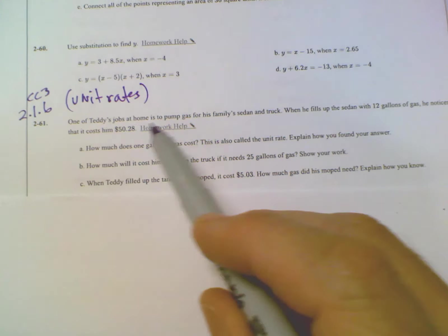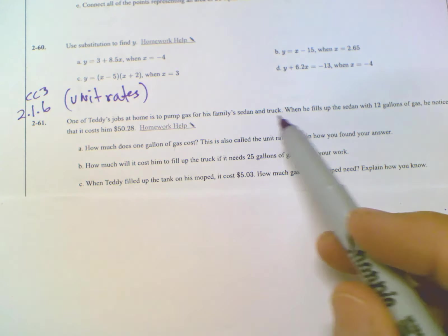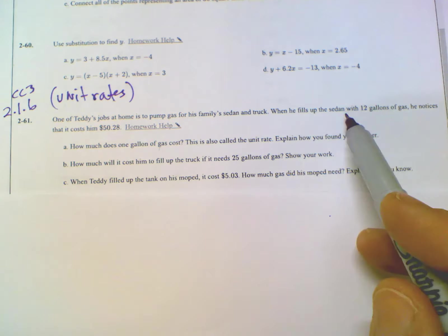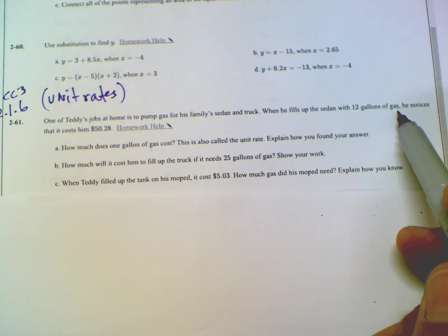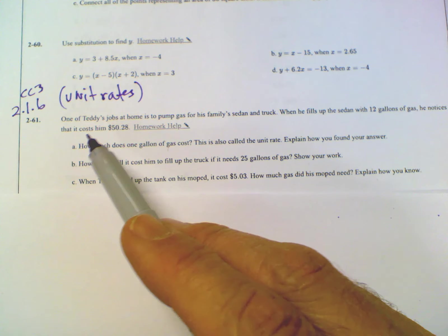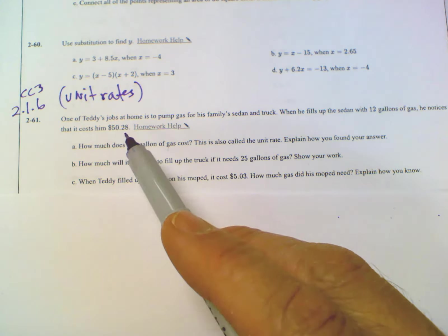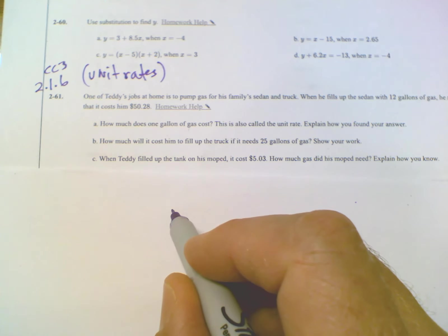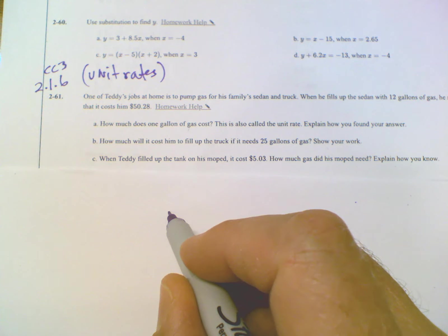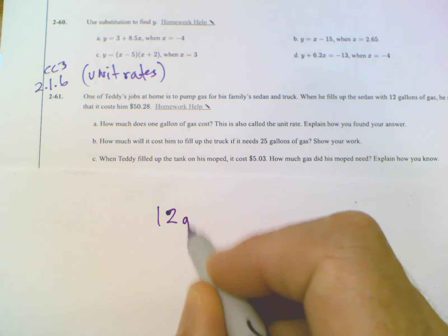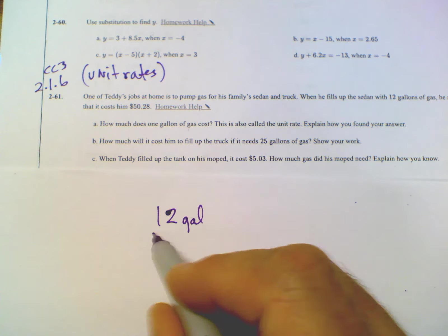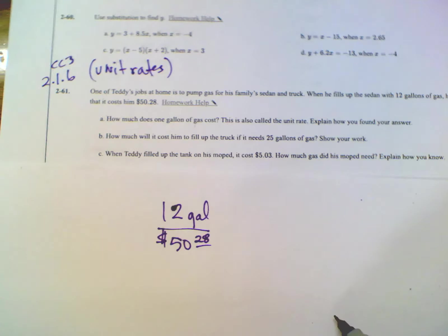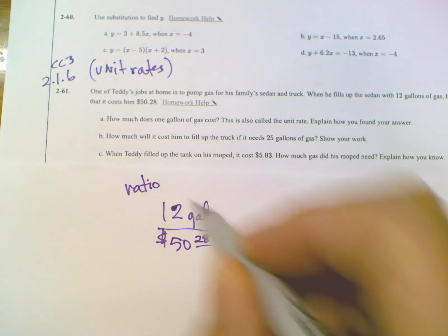So one of Teddy's jobs at home is to pump gas for his family's sedan truck. When he fills up the sedan with 12 gallons of gas, he notices that it costs him $50.28. So right there, I have a ratio. I'm going to write my ratio. So we know that it's for every 12 gallons of gas, it's $50.28. Right? That's my ratio that I can write. It's not a unit rate. It's a ratio.